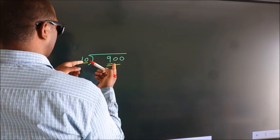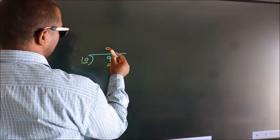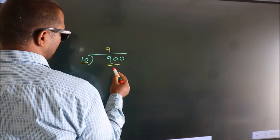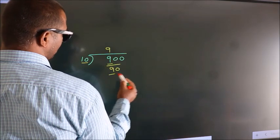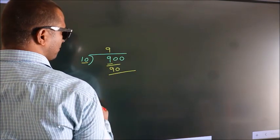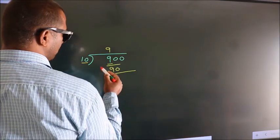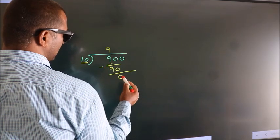In the 10 table, 10 nines is 90. Now we should subtract. We get 0.